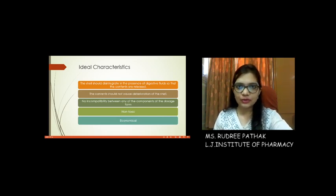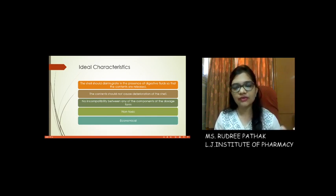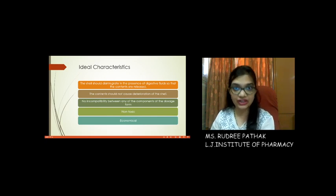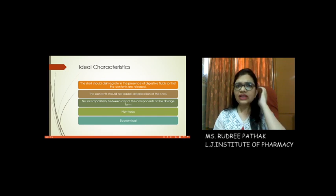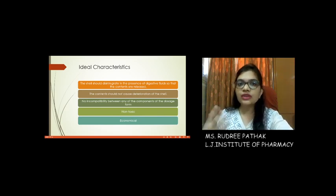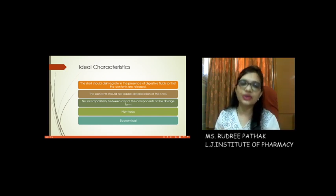Now, there are certain ideal characteristics of capsules. There should be minimum contact or minimum interaction between the dosage form and the shell. Otherwise, there are chances that the shell, which is made up of gelatin, may react with the product, or the product may deteriorate the characteristics of the shell. The second important characteristic is that the product should be released in the intended area. The gelatin should dissolve in the relevant digestive juices where you want to release your product, so the contents are properly released.